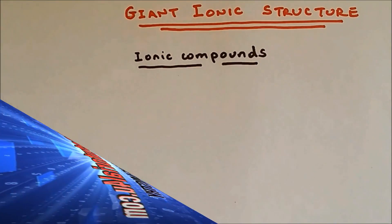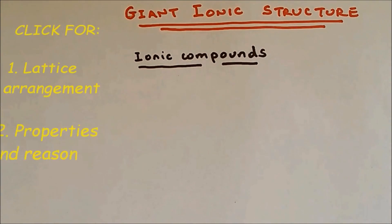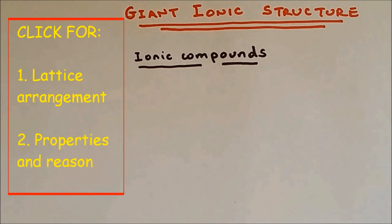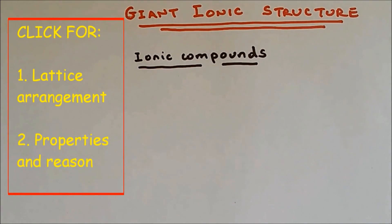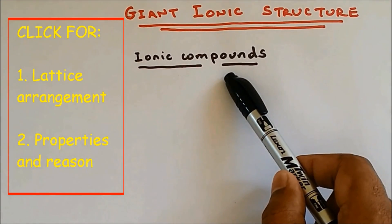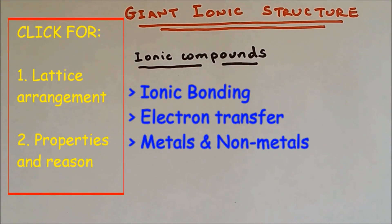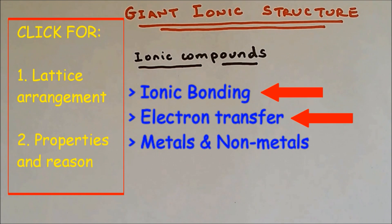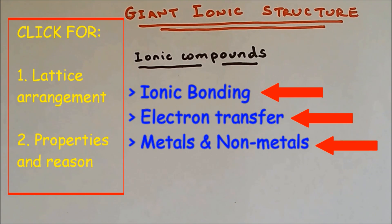Hi everyone, welcome to Science Tutorial for You. In this video I'm going to go through giant ionic structure. Giant ionic structure happens in ionic compounds. Ionic compounds contain ionic bonding, which involves the transferring of electrons between metals and nonmetals.